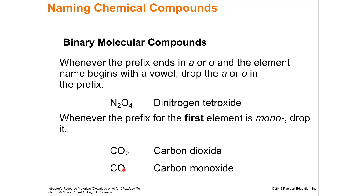If a prefix ends in a vowel and the element name starts with a vowel, you drop one vowel. For example, mono- plus oxide becomes monoxide. Also, if the first element has only one atom, you don't say monocarbon — you just say carbon. So CO is carbon monoxide, not monocarbon monoxide.